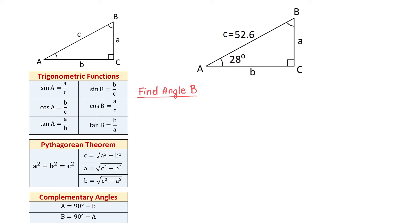The formula is B equals 90 degrees minus angle A. We will replace A with 28 degrees, so we have 90 degrees minus 28 degrees, giving us B equal to 62 degrees.